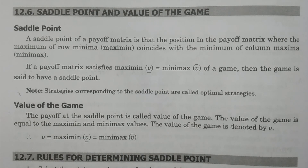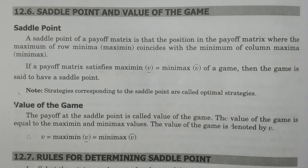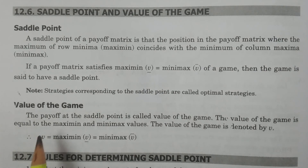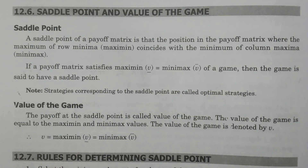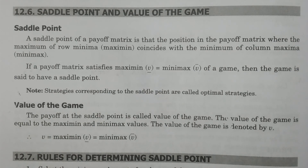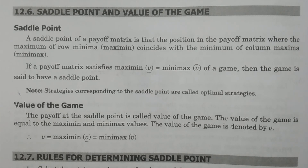The payoff is the amount transferred between player A and player B. The saddle point exists at a particular position — for example, the first row and second column, position (1, 2). The value at that position is the amount that represents the value of the game.